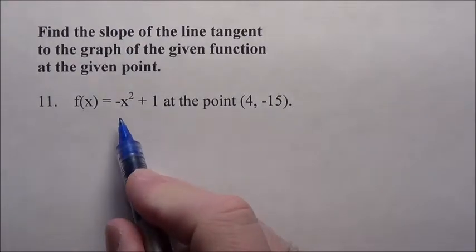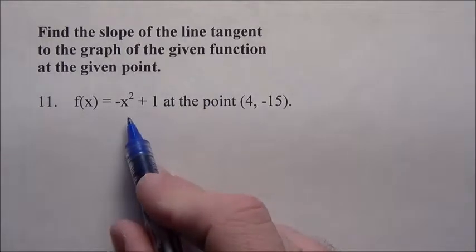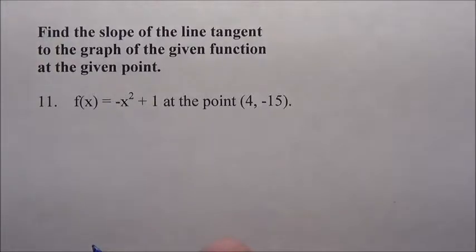So basically we want to know if we graphed this line, what would be the slope of the tangent line that's touching right at the point (4, -15) on this equation here?